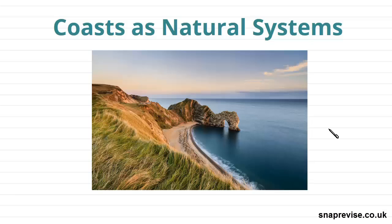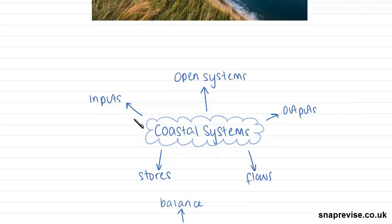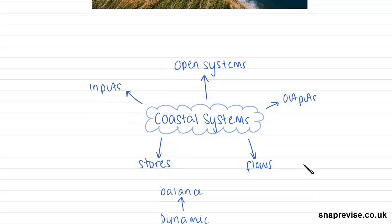Like other processes in geography such as the carbon cycle and the water cycle, coasts also act as natural systems and therefore we can study them using a systems approach. There is a separate video covering the major details of systems and their processes, but just to recap, systems tend to have inputs, outputs, stores and flows. If you want more information on exactly how systems work in general, there is an entire video on that.